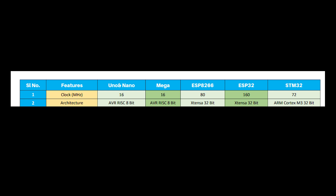Now the microcontroller architecture: Uno, Nano, and Mega share the same AVR RISC 8-bit architecture. Both the ESP32 and ESP8266 are from Espressif Systems and use the Xtensa 32-bit architecture. Only the STM32 uses ARM Cortex-M3 32-bit architecture, and nowadays ARM architecture is also used in smartphones.